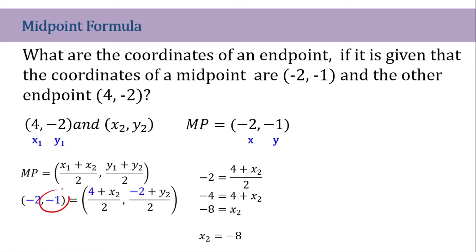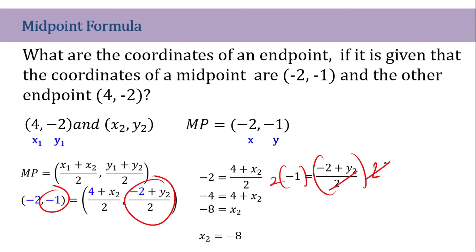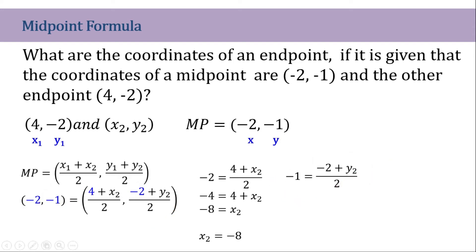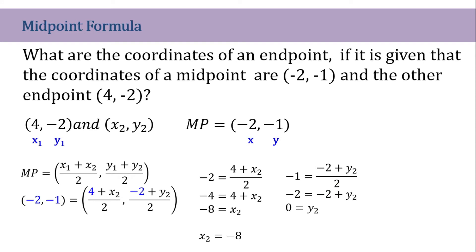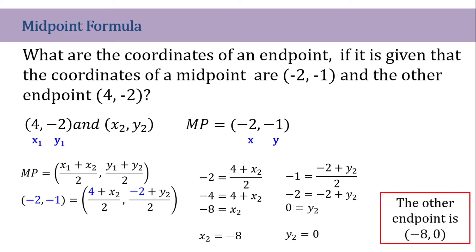On the other hand, we have negative 1 is equal to negative 2 plus y sub 2, all over 2. Multiply both sides by 2 to cancel out: we have negative 2 is equal to negative 2 plus y sub 2. Add 2 on both sides and cancel out, so y sub 2 is equivalent to 0. Therefore, the other endpoint is (negative 8, 0).